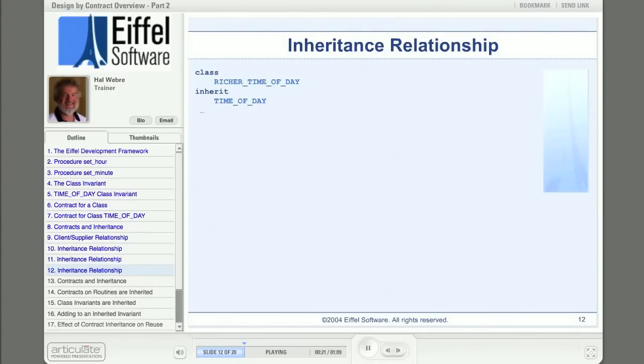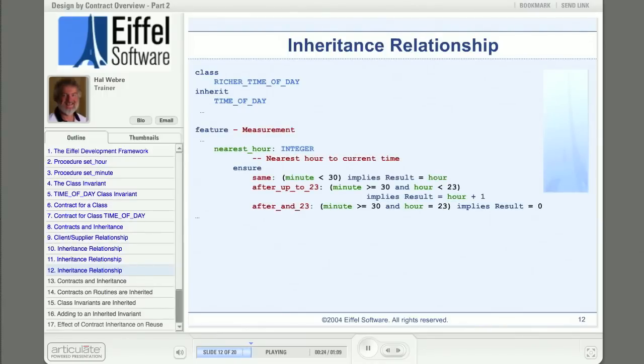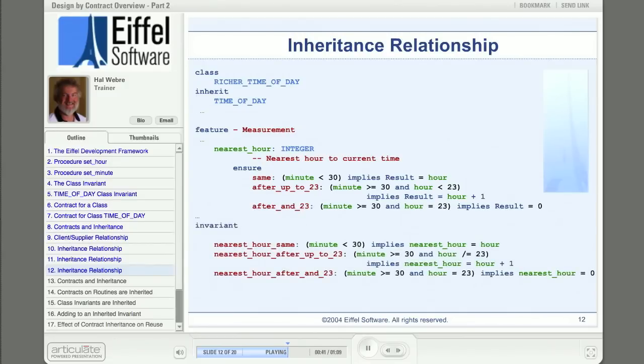So we build a better, or at least a richer, TIME_OF_DAY class. But we don't do it by copying the old one and hacking it. Instead we use inheritance to make our new class an heir to TIME_OF_DAY. At this point our class will have the same set of features as TIME_OF_DAY, but of course we want to add a new feature. So we do that. Nearest_hour returns an integer that is the hour nearest the time held by an instance of RICHER_TIME_OF_DAY. Nearest_hour is a function and as such can have its own contract. In this case just a postcondition that describes the semantics of the computation. Then lastly we might want to write assertions into the class invariant that ensure that nearest_hour always returns the right value. One could argue that this is a bit of duplication. But if we decided later to change the implementation so that nearest_hour was an attribute rather than a function, these invariant clauses would be critical to the validity of instances.